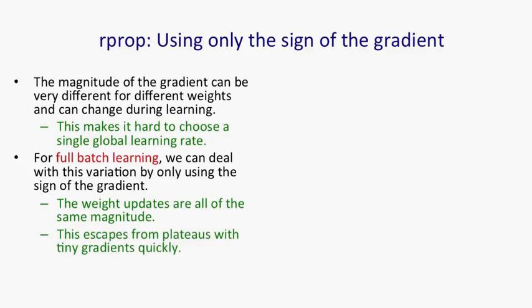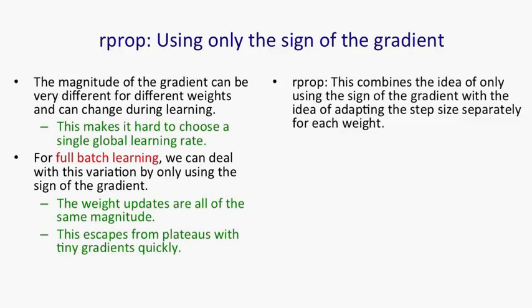For issues like escaping from plateaus with very small gradients, this is a great technique, because even with tiny gradients we'll take quite big steps. We couldn't achieve that just by turning up the learning rate, because then the steps we took for weights that had big gradients would be much too big.